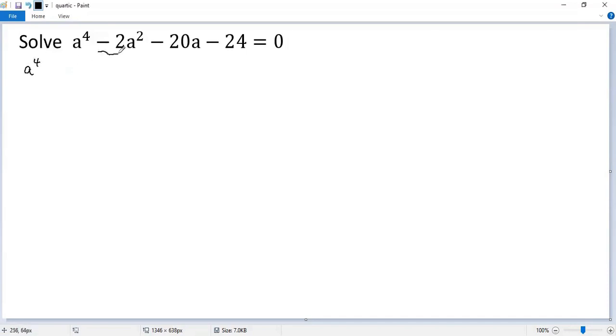a to power 4, the second term can be changed to plus 2a squared minus 4a squared, and then minus 20a. This term can be changed to plus 1 minus 25 equals 0.